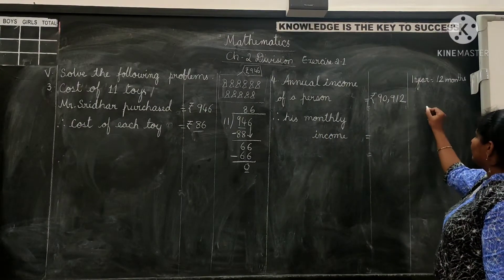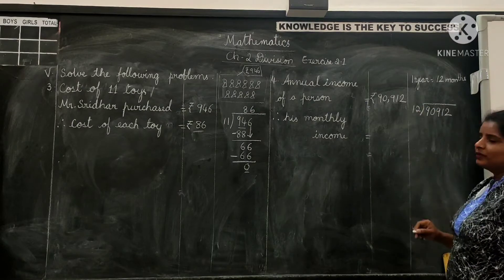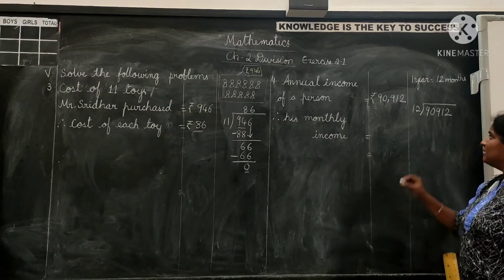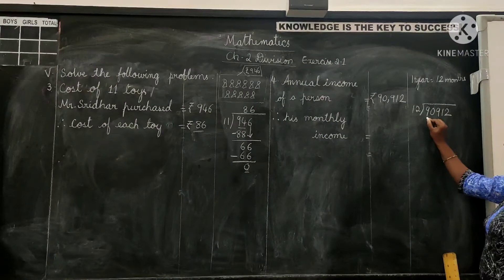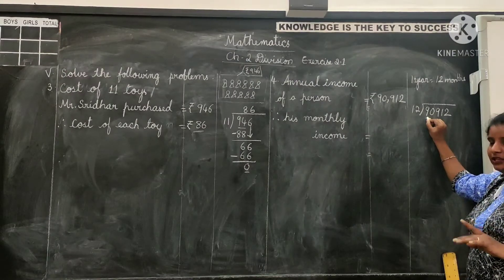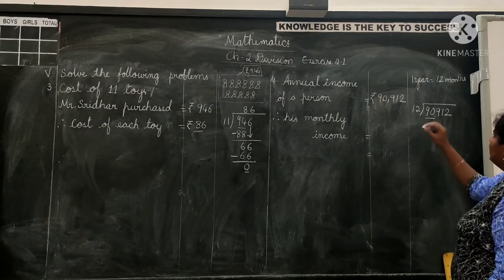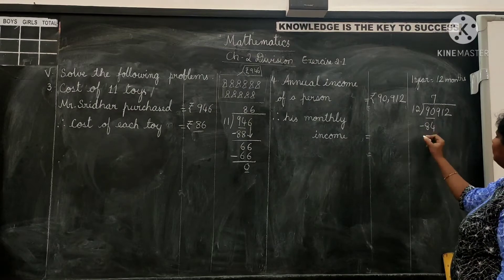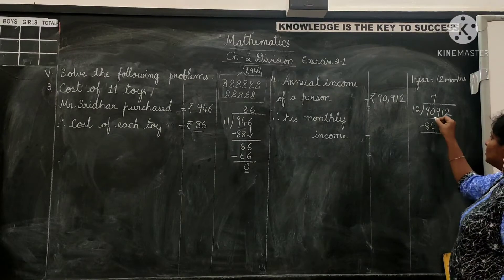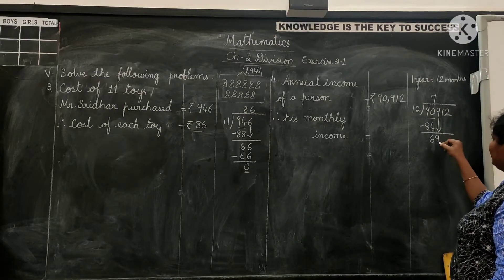So directly solving it, 90,912 divided by 12. Dividing 90,912 by 12 gives us monthly income. Start division from high place of the dividend, which is ten thousands. We have 9 in ten thousands place which is less than 12, it cannot be divided by 12. Take one more number. 12 seven times gives you 84. 7 in quotient's place, 84 in thousands. So 90 minus 84 gives us 6. Get 9 down, this is 69.